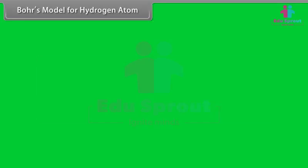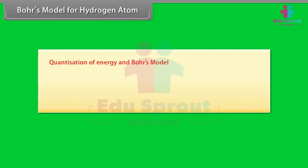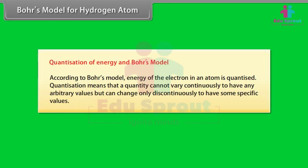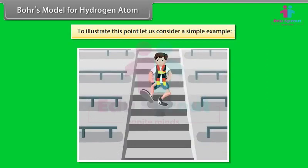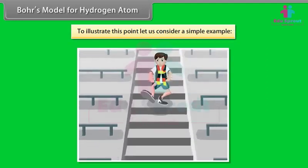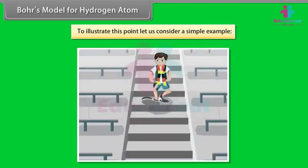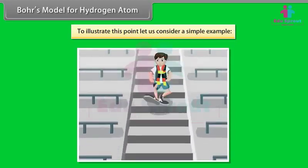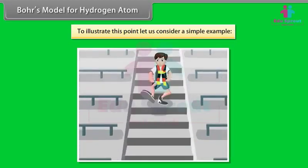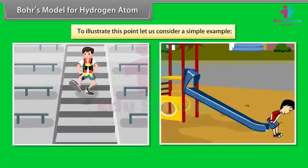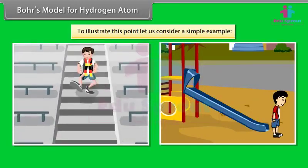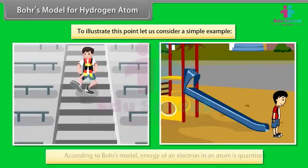Quantization of energy and Bohr's model: According to Bohr's model, the energy of the electron in an atom is quantized — meaning it cannot vary continuously but can change only discontinuously to specific values. For example, a person moving down a staircase can only have certain definite energy values corresponding to each step — energy is quantized. A person moving down a ramp can have any value of energy — energy is not quantized. Similarly, the energy of an electron in an atom is quantized.